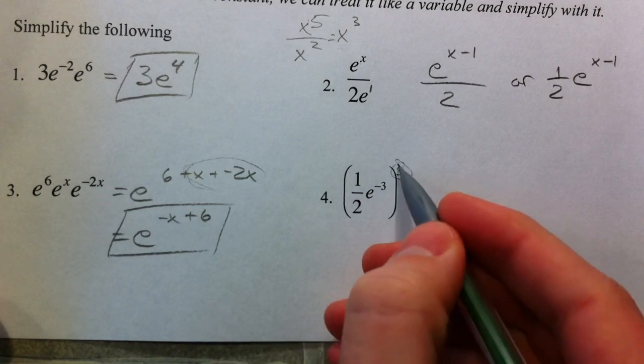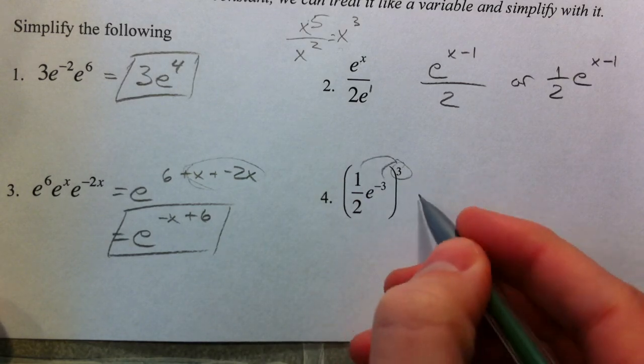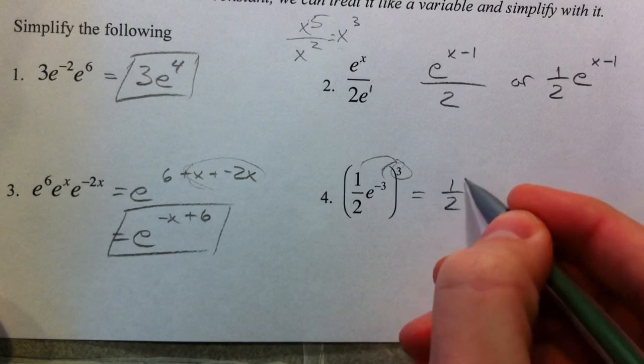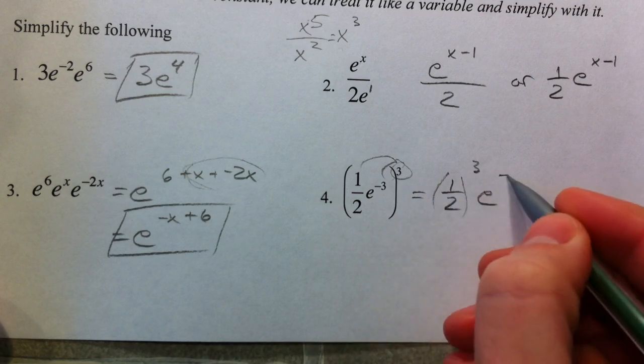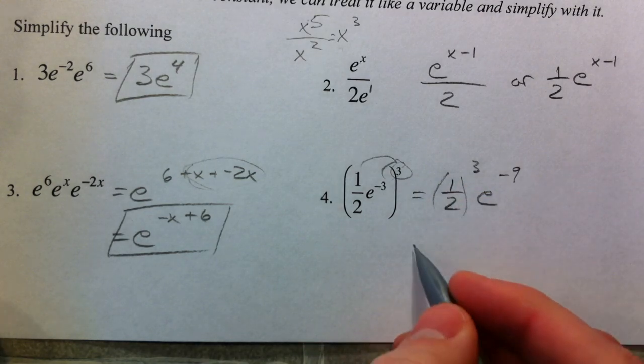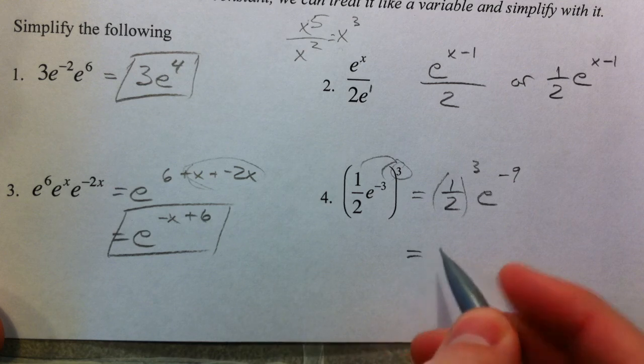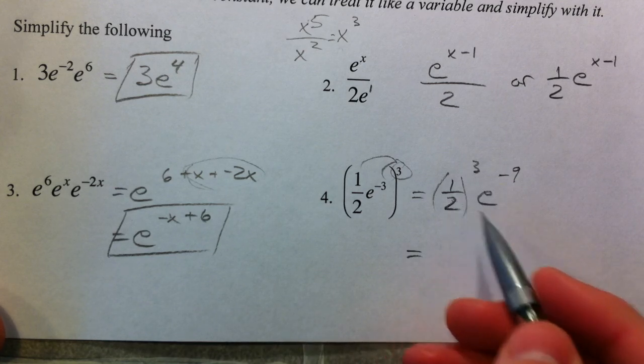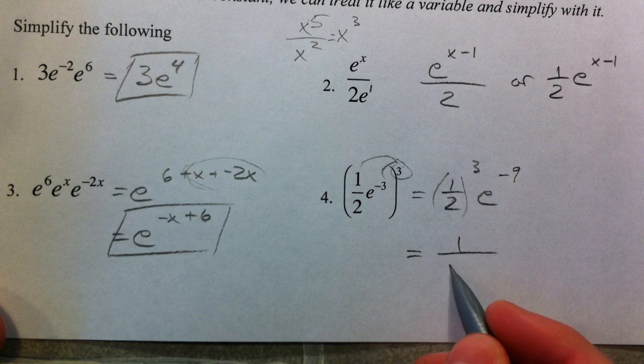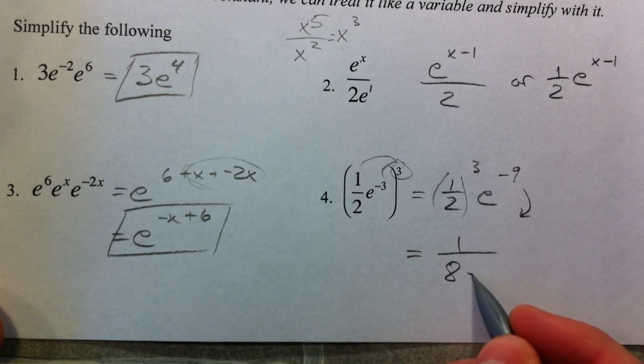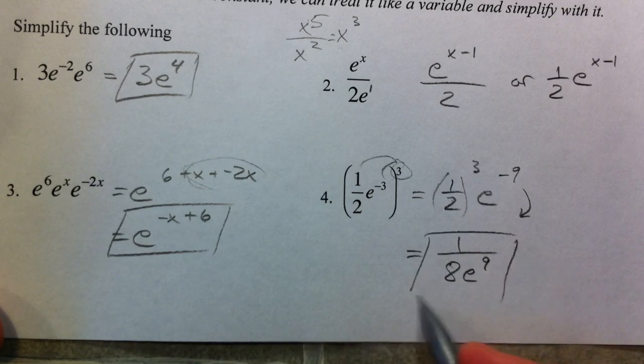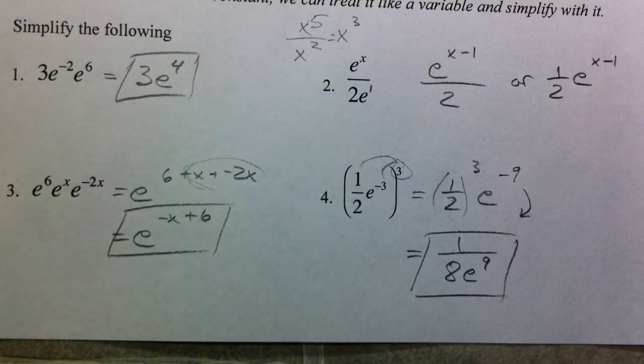And this cube applies to both of these. And so you have 1 half cubed and E to the negative 9th. And so we take care of that by multiplying it just like we did before. 1 half cubed is 1 half times 1 half times 1 half. And so that's 1 over 8. And the E to the negative 9th we bring to the bottom, and we write E to the positive 9th. So that's nothing new. We're just utilizing properties of exponents, adding and subtracting, and then combining like terms when we have to.